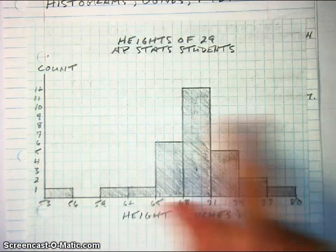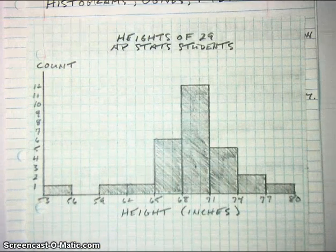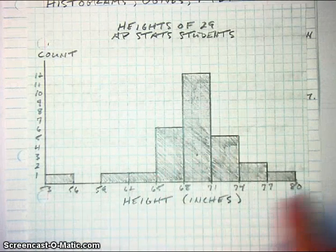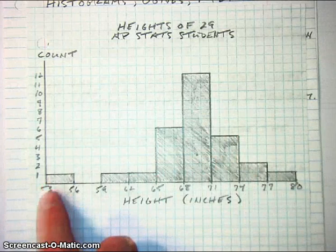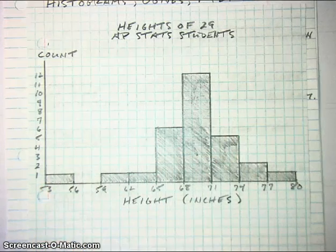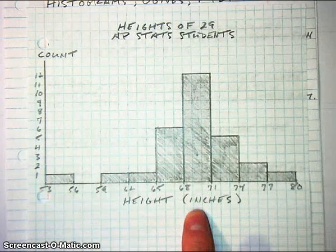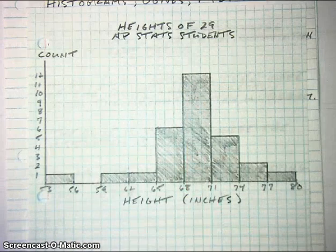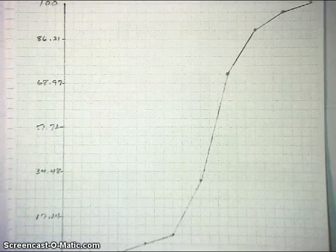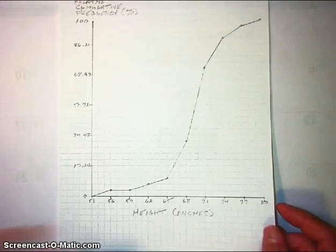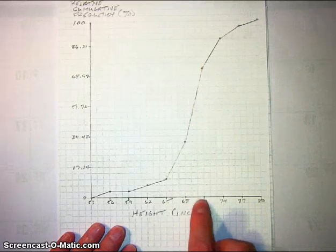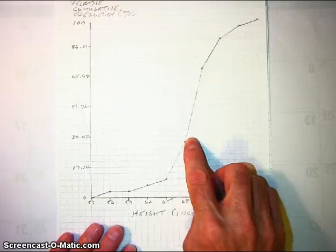Here is our example of the 29 heights of the AP stat students. This is a fairly symmetric distribution except for one little observation on the side. The histogram is tallest in the interval between 68 and 71 inches. When we look at our ogive, we see something similar — the steepest part of the ogive is between 68 and 71 inches, which is where the histogram was tallest.